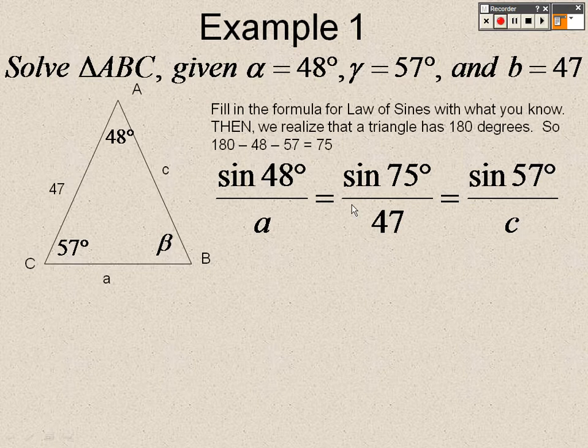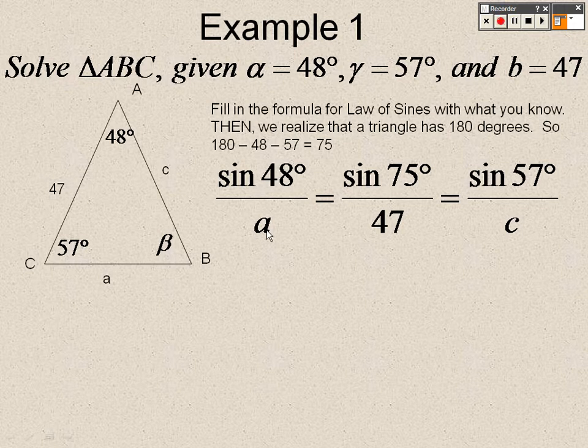So now that I have that set up, now I can cross-multiply these to solve. And the reason I can cross-multiply is this side has two answers to it. So I can cross-multiply because there's only one letter available. So I'm going to solve for A first.